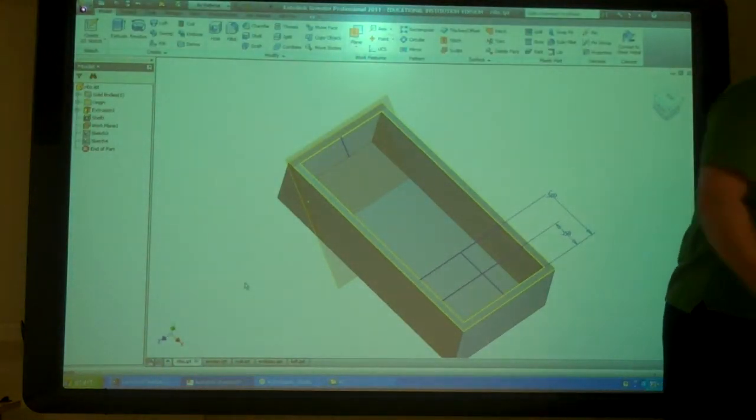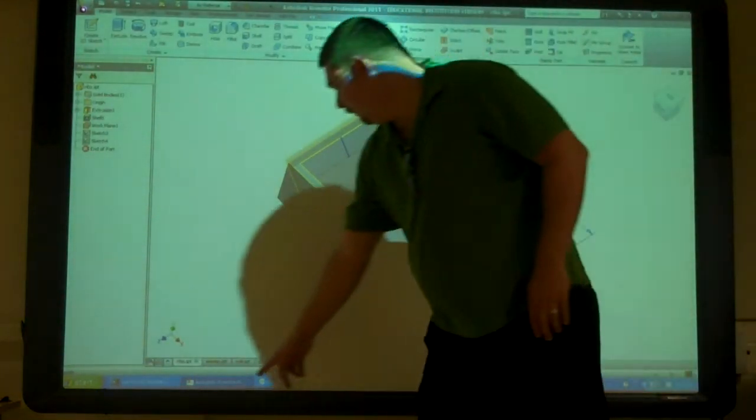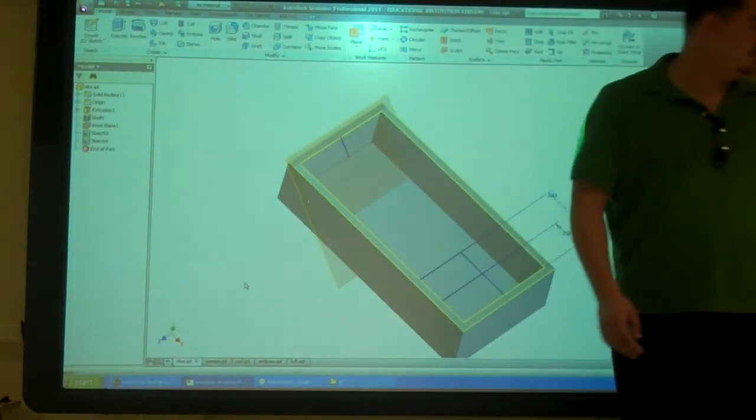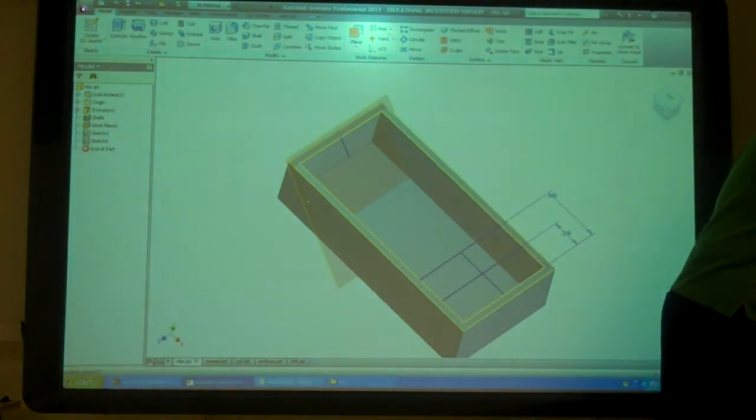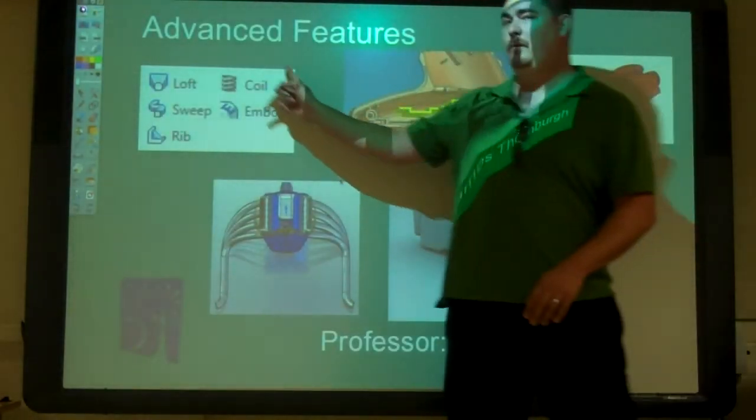It has 5 parts, so we have one for ribs, sweeps, coils, embosses and loft which happen to be what we are talking about today.